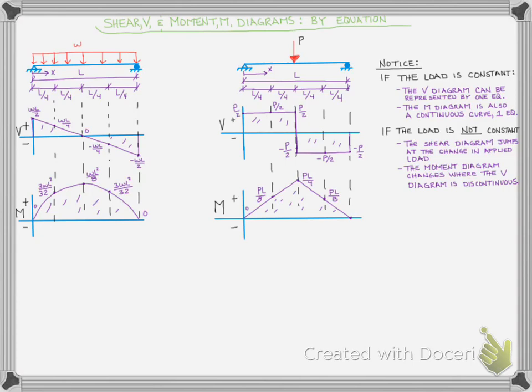If we were to cut a bunch of sections and take a bunch of time cutting a section at zero and then at L over eight and L over four and three L over eight and L over two, we could get all the values that we could use to plot that shear diagram, so we could see how the internal shear varies along the length of the beam.